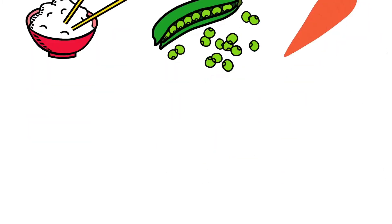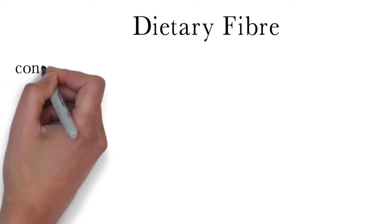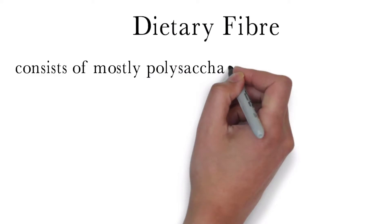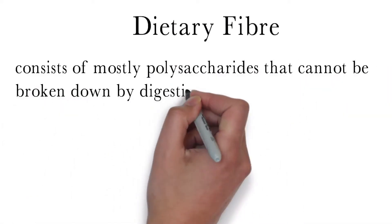Dietary fibers are found in all plant-derived foods. Fibers make up the structural parts of plants such as cell walls. Fibers consist of mostly polysaccharides that cannot be broken down by our digestive enzymes, meaning they provide little to no energy.